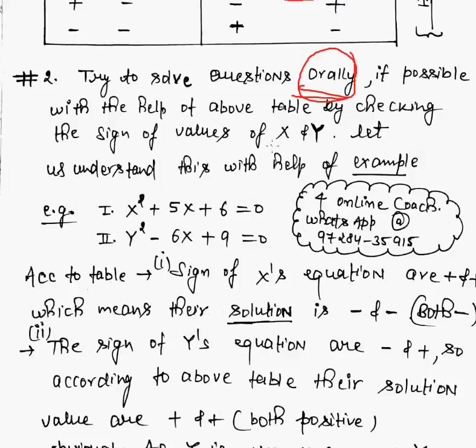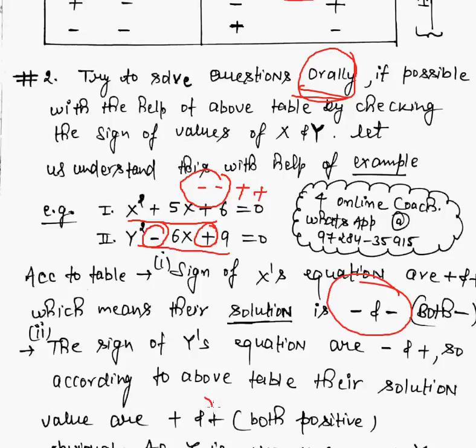We can solve just by checking. These are two equations. Value of b is plus and value of c is plus, this means the answer will be minus and minus. In the second equation, value of b is minus and value of c is plus, this means the answer would be plus and plus. X value is both negative and y value is both positive.